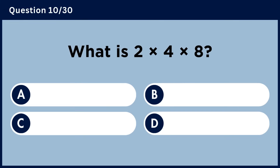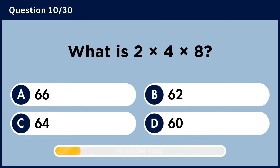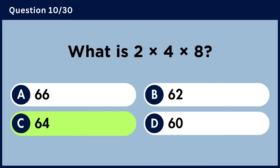What is 2 multiplied by 4 multiplied by 8? Answer C, 64.